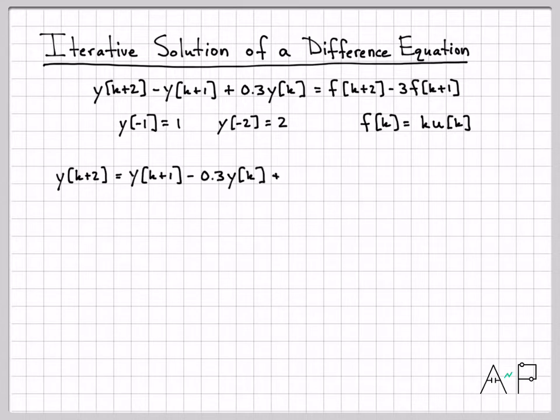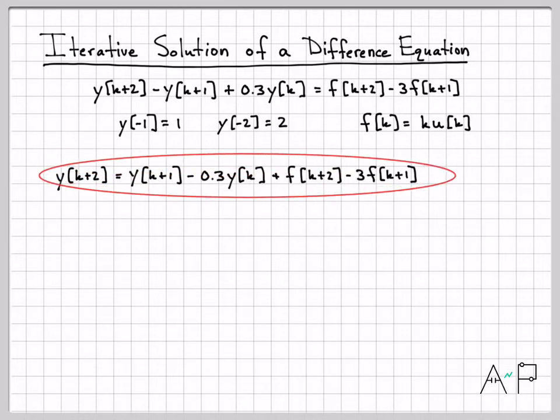One thing I like to do is, since I'm going to solve this equation for Y of K, I like to isolate one of these Ys on the left side of the equation. This term and this term, I'm going to move to the other side of the equation. I've moved two of those Y terms to the other side.